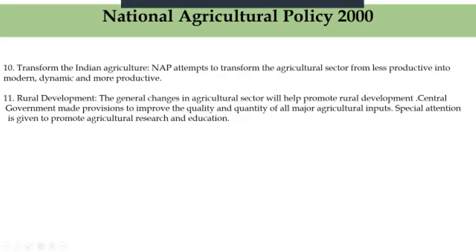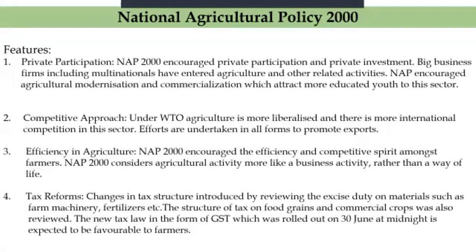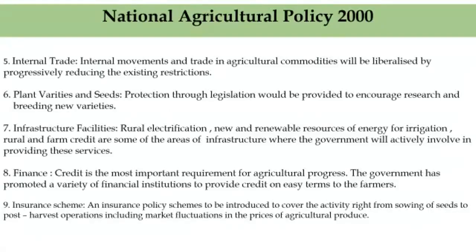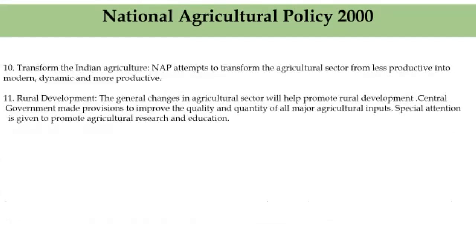So, all these are the features of National Agricultural Policy 2000: first, private participation; second, competitive approach; third, efficiency in agriculture; fourth, tax reforms; fifth, internal trade; sixth, plant varieties and seeds; seventh, infrastructure facilities; eighth, finance; ninth, insurance scheme; tenth, transform Indian agriculture; and the last one is rural development.